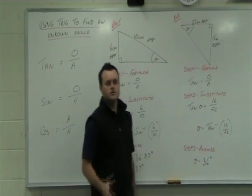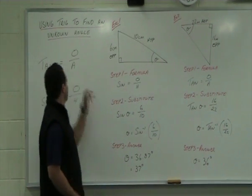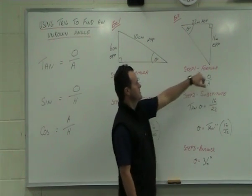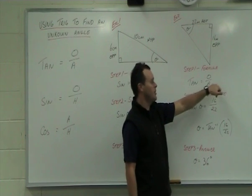So, in your head, which one of those uses opposite and adjacent? And that is really easy. It's a tan sign. So, write the formula down. Tan is equal to opposite over adjacent.